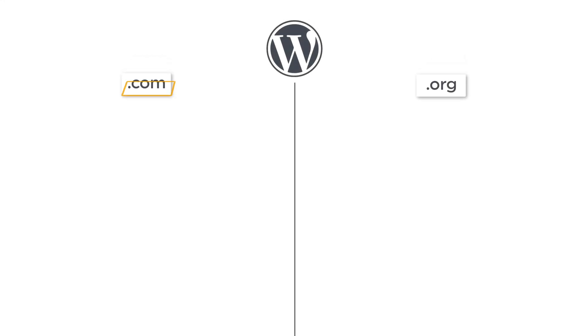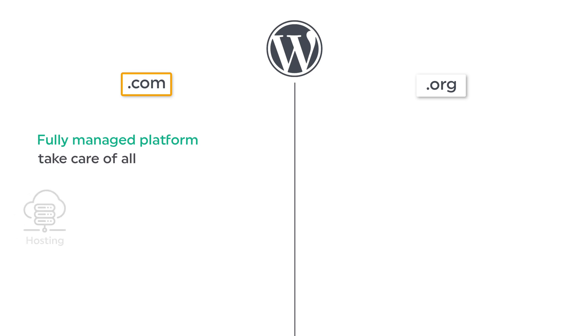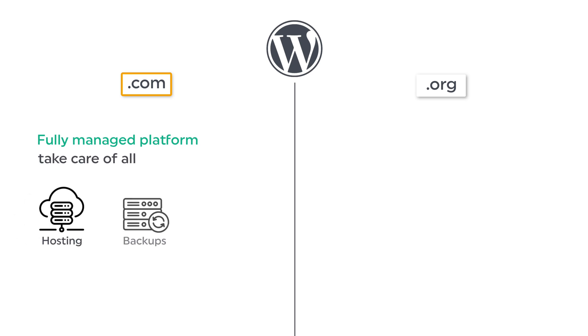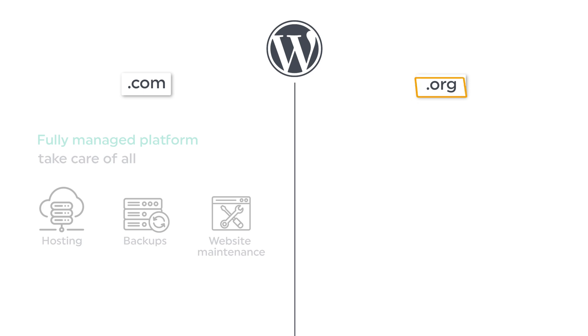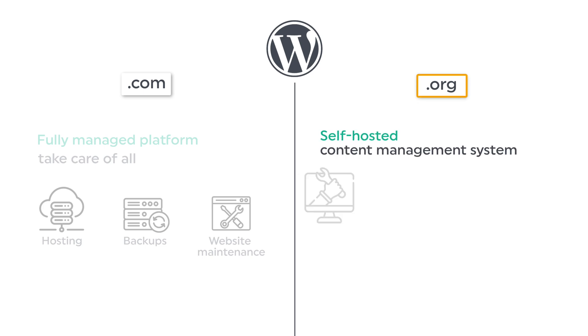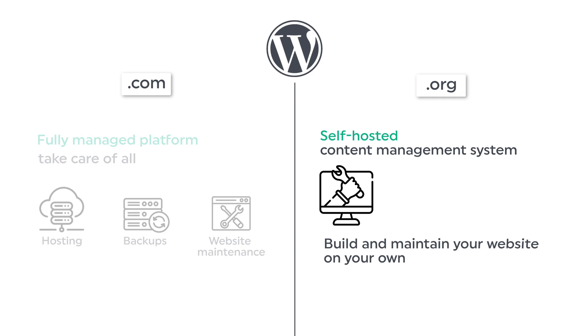Now if you don't know the difference between WordPress.com and WordPress.org, here it is. WordPress.com is a fully managed platform, which means they take care of all hosting, marketing, backups, and website maintenance, while WordPress.org is a self-hosted content management system which you can use to build and maintain your website on your own.